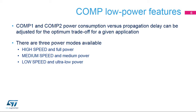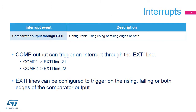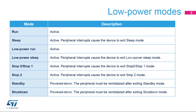The comparator can stay active even if the rest of the system is suspended and the clock is switched off. It can trigger an interrupt on the rising, falling, or both edges of the comparator output through the EXTI line. The on-chip comparator remains active and can be used to wake up the device from all low-power modes except standby and shutdown.